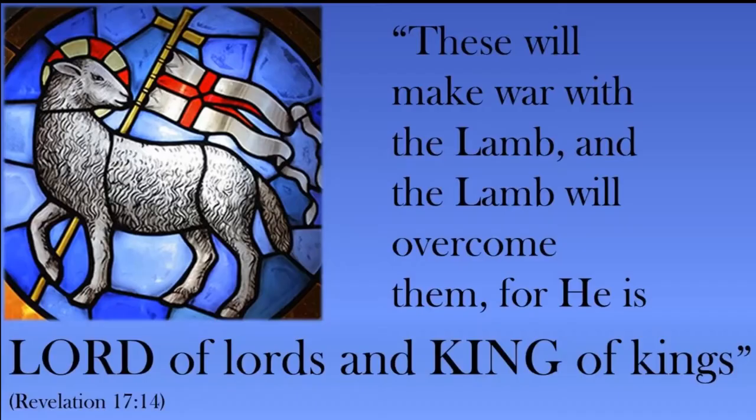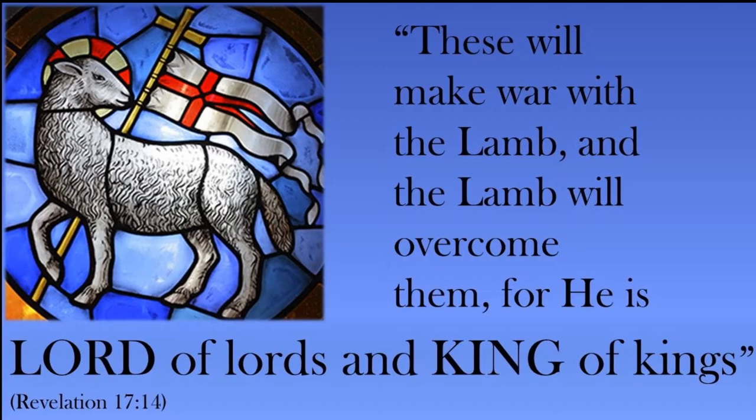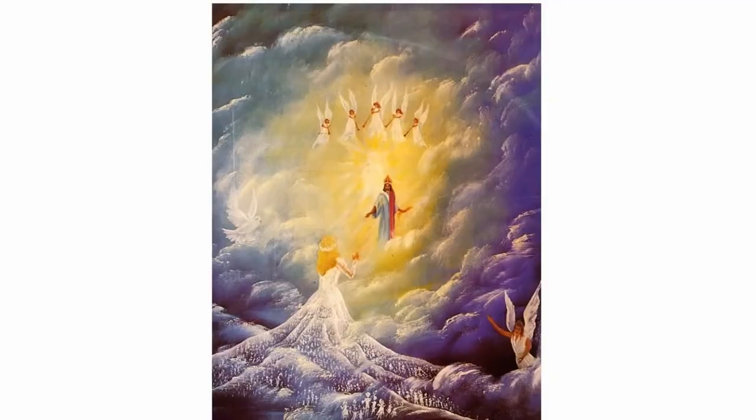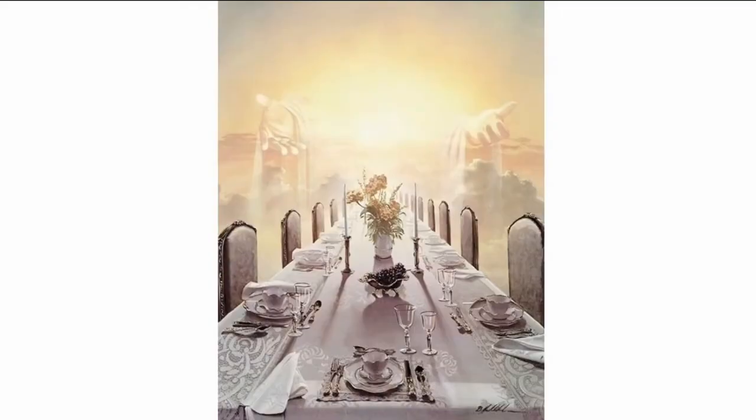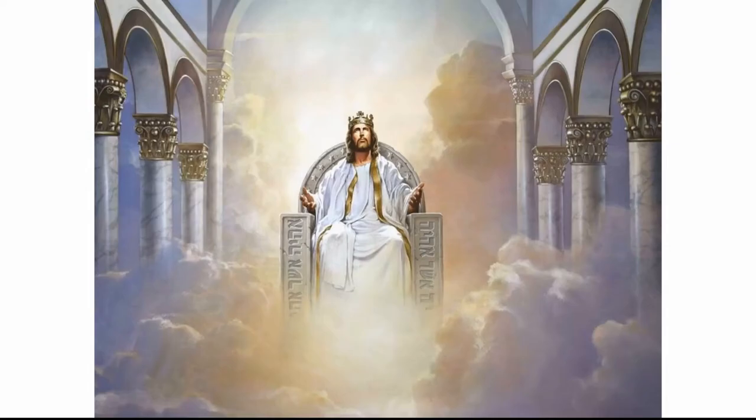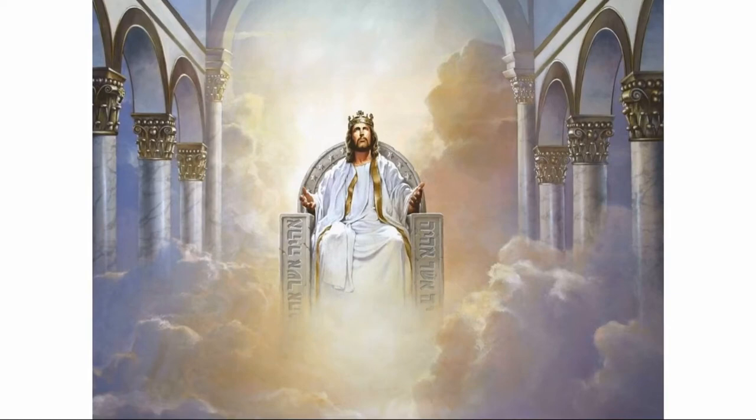In chapter 17 the final antichrist and his minions make war against the Lamb, but the Lamb overcomes them because he is Lord of lords and King of kings. In chapter 19 all heaven rejoices because of the marriage of the Lamb, and his faithful followers on earth are also filled with joy that they will attend the marriage supper of the Lamb. Finally in chapters 21 and 22, verse after verse proclaims that Jesus the Lamb is and will be at the very center of the eternal kingdom of God.